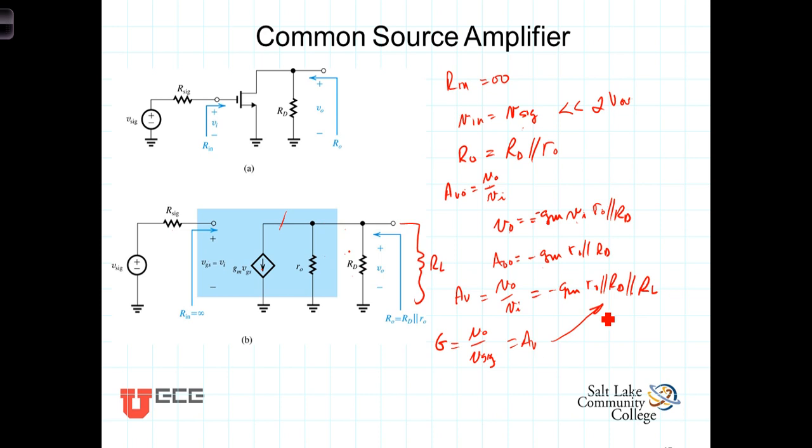Let's summarize this. The common source amplifier has a high input resistance and therefore it doesn't load down the source. That's a plus.